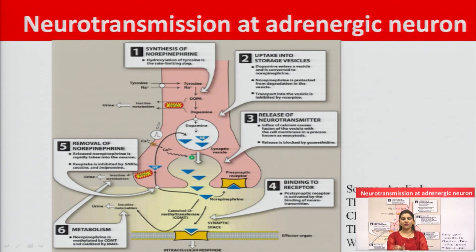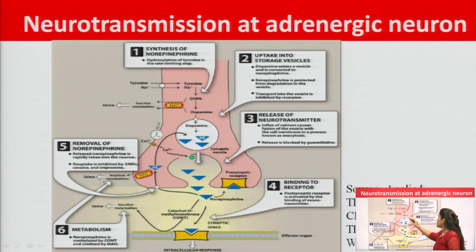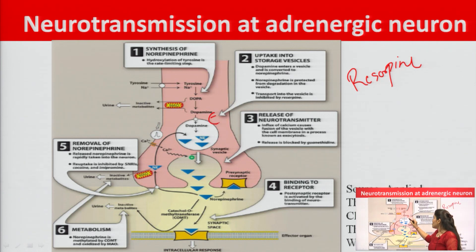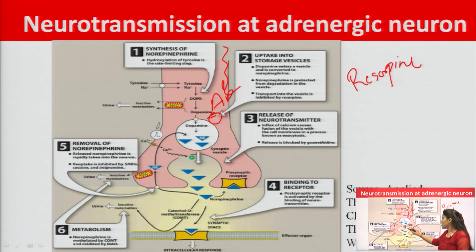After synthesis, noradrenaline is stored in synaptic vesicles, just as acetylcholine is stored. Transport into the vesicle is inhibited by reserpine. Inside the synaptic vesicle, dopamine is converted into noradrenaline. Whenever an action potential arrives, noradrenaline is released by rupturing of the vesicular membrane with the axonal membrane, releasing the neurotransmitter into the synaptic cleft.